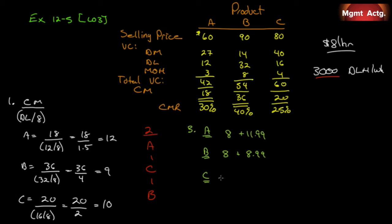So for product A we're willing to pay up to eleven ninety-nine in overtime wages. Product B: base rate is eight dollars plus up to eight ninety-nine in overtime. Product C: eight dollars plus up to nine ninety-nine. Every extra hour of labor on product A generates another twelve dollars in contribution margin, so even paying up to eleven ninety-nine in overtime, we're still ahead.